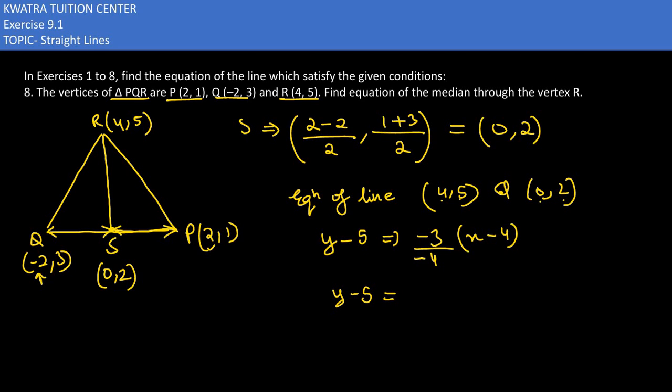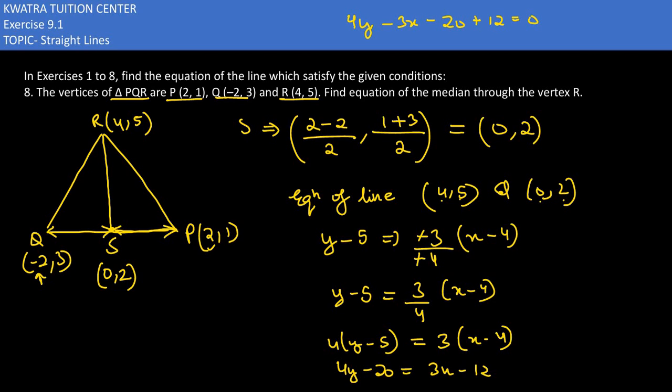So what is our value? Y minus 5, canceling negative sign with negative sign, equals 3/4 times (X minus 4). Take 4 to the left side in multiplication: 4Y minus 20 equals 3X minus 12. Take all the terms to the left side, so it would be 4Y minus 3X minus 20 plus 12 equals 0. Now what is -20 plus 12? That's -8.